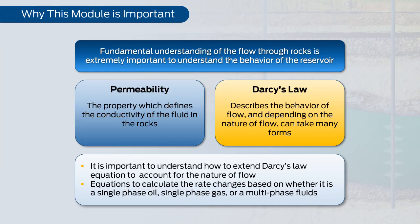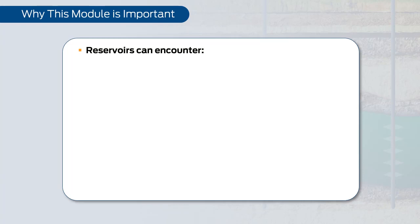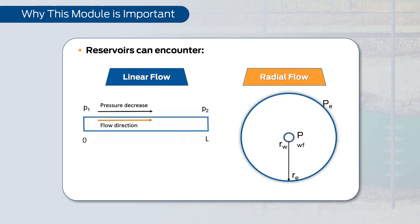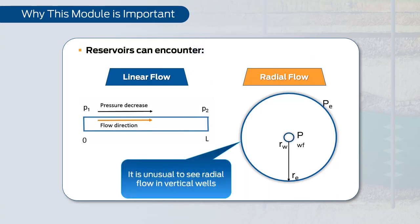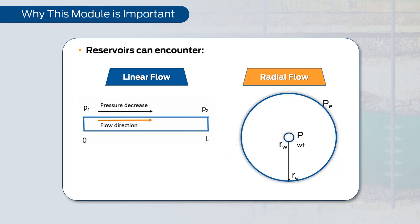A reservoir can encounter both linear flow and radial flow. It is not unusual to see linear flow in horizontal wells, but it is radial flow in vertical wells. The pressure drop predictions based on these flow regimes are different and need to be treated differently.